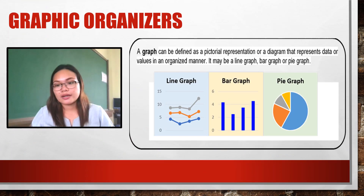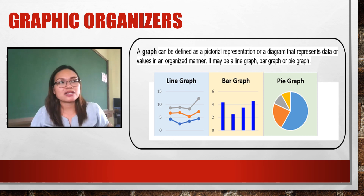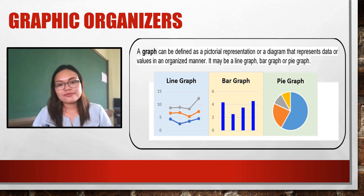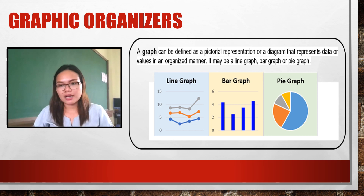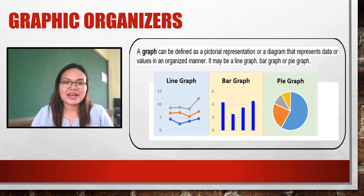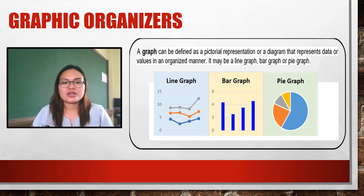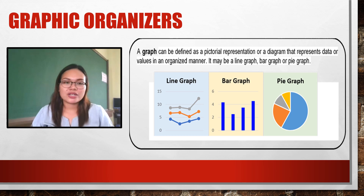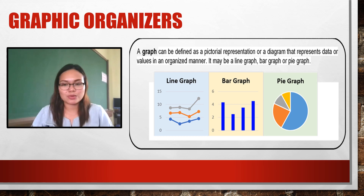The third graphic organizer is a graph. A graph has three types: a line graph, which uses lines; a bar graph, which uses bars; and a pie graph, which is a circle divided into several sections — just like a pizza pie. A graph is a pictorial representation or diagram that represents data or values in an organized manner. We use graphs when dealing with numerical data or values.